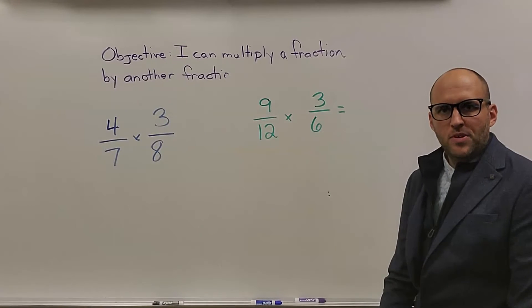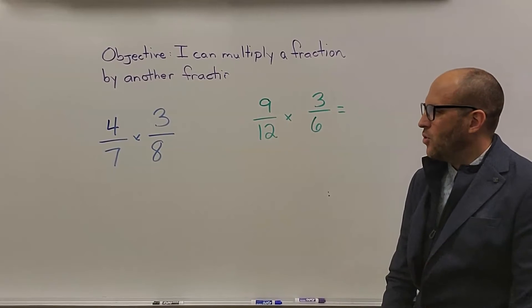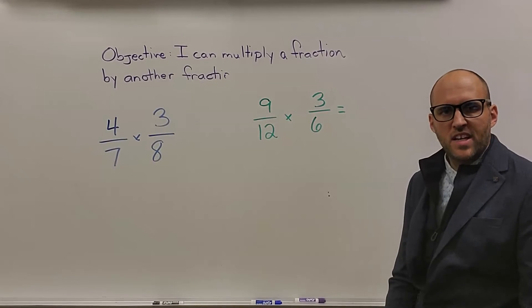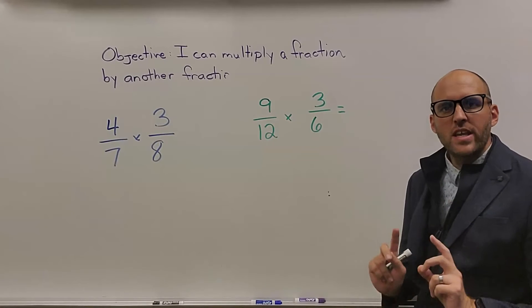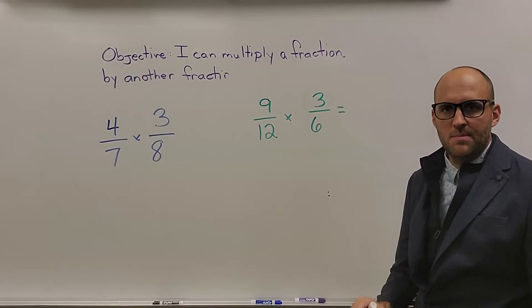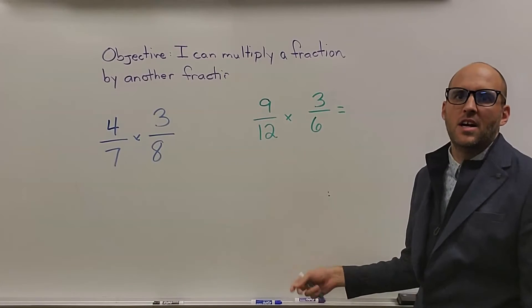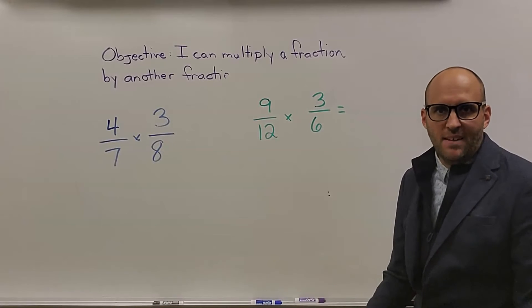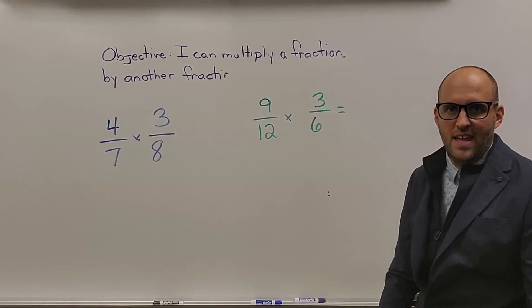All right, friends. We have two problems here. Let's really work on our simplifying. Let's multiply 4/7 times 3/8 and 9/12 times 3/6. Pause the video, take a couple seconds, work through your simplifying. And when you get to the end, make sure you've simplified everything. Remember, simplifying, the only number that should be able to go into both the numerator and denominator is 1. So, if you don't get everything, you can still simplify at the end to get the correct answer. So, let's try it out and we'll see you at the end when you're done.